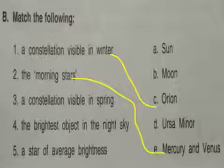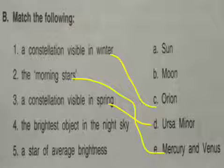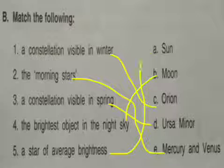Third: A constellation visible in spring — the answer is Ursa Minor. Fourth: The biggest object in the night sky — the answer is Moon. Fifth: A star of average brightness — that is the Sun.